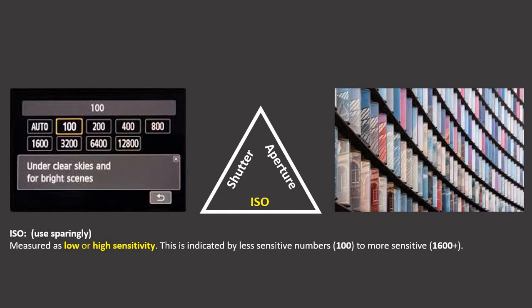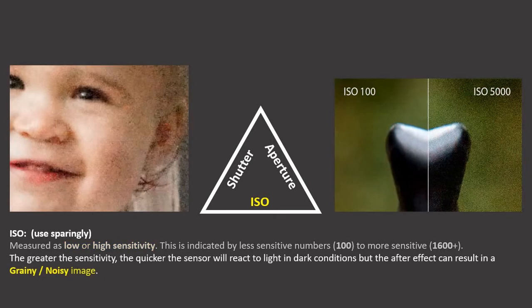ISO is measured in high or low sensitivity, indicated by less sensitive numbers in the hundreds or more sensitive numbers in the thousands. On low you'll get detail, so it's good for architectural imagery or anything where you want a lot of detail. The greater the sensitivity, the quicker the sensor reacts to light in dark conditions, but the after effect is a grainy image. For example, I was once in a cave in Greece and wasn't able to use my flash, but I could take pictures with a high ISO which gave me relatively sharp images — but they were grainy, and sometimes depending on the make of the camera the grain can be quite intrusive.